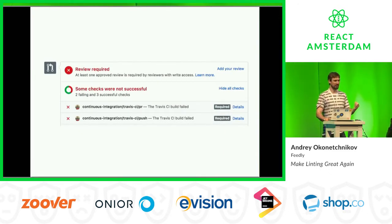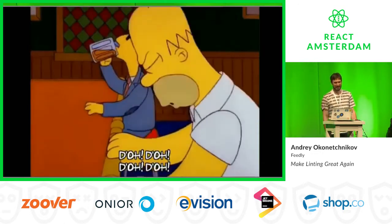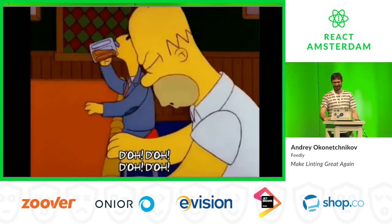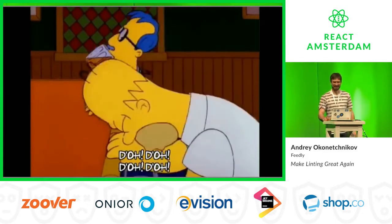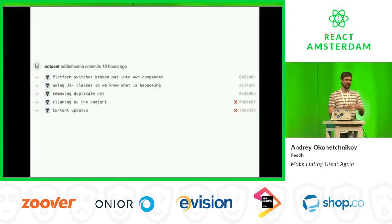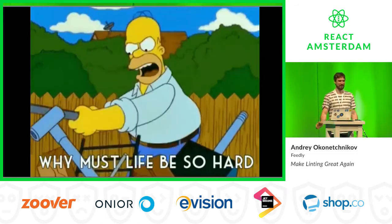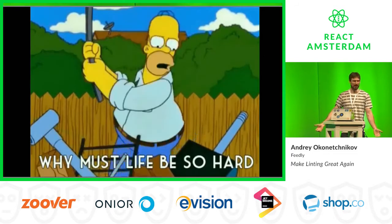And you go to Travis CI just to find out — oh, yeah. At this time you're like, oh my God, why? So you go back to your IDE, you fix a semicolon, you push your code again, and it's green. Cool. But still, it's hard, right? Why?